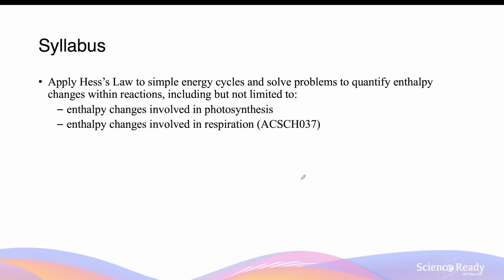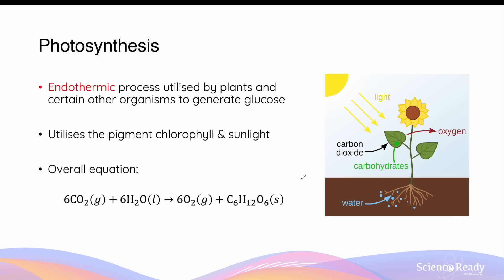In this video we'll discuss the concept of Hess's law in regards to two reactions: photosynthesis and aerobic respiration. By way of review, photosynthesis refers to an endothermic process utilized by plants and certain other organisms to generate glucose, which is an organic substance that can be broken down to derive energy. Essentially, photosynthesis is a process through which these organisms produce energy-storing chemicals inside their cells.